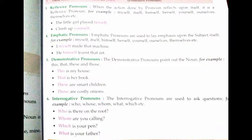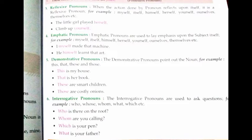Demonstrative pronoun: demonstrative pronouns point out the noun. Examples: this, that, these, those. For example: 'This is my house', 'That is her book', 'These are smart children', 'Those are costly onions.' यहाँ पर pronoun किसी noun को point out कर रहा है — इसलिए demonstrative pronoun कहलाते हैं।